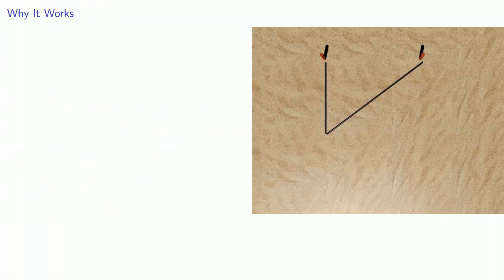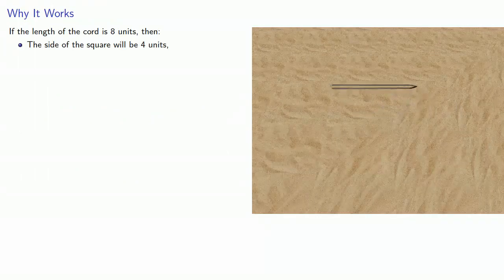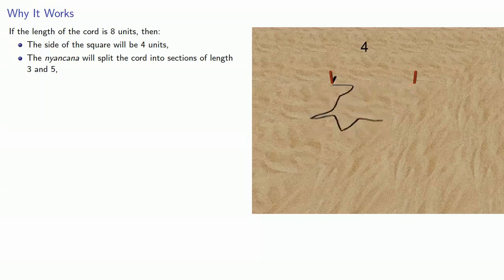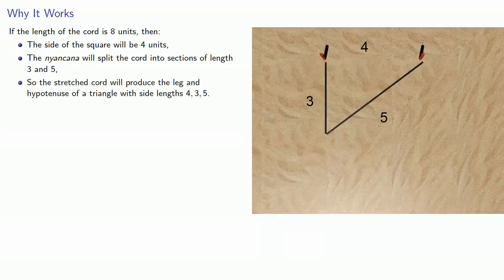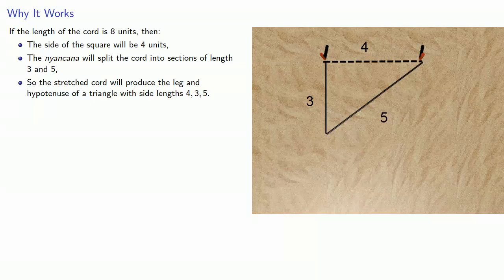So, why does this work? If the length of the chord is eight units, then the side of the square will be half of that, four units. The nyankana will split the chord into sections of length three and five. The stretched chord will produce the leg and hypotenuse of a triangle with side lengths four, three, and five, which is a right triangle.